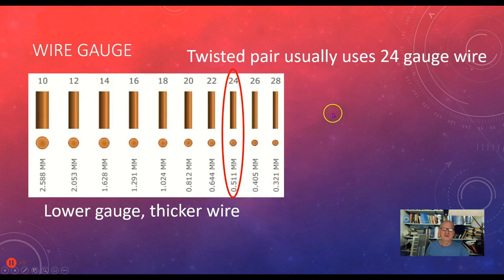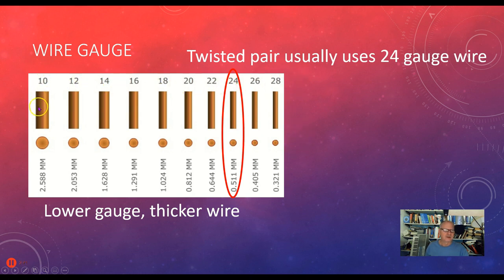The typical gauge of wire used in twisted pair — and this is not 100% in every case — is 24 gauge. Note that the smaller the gauge number, the larger the size of the wire.